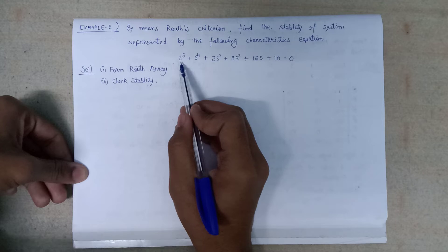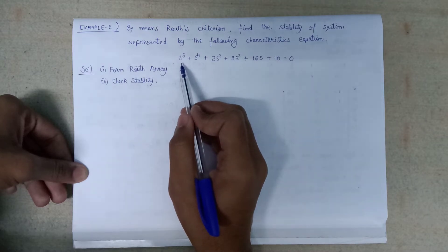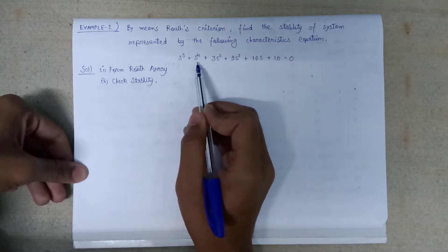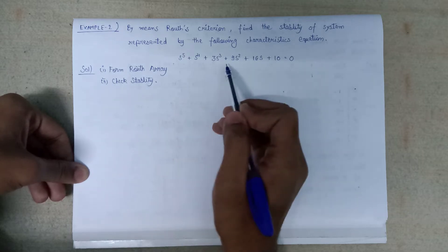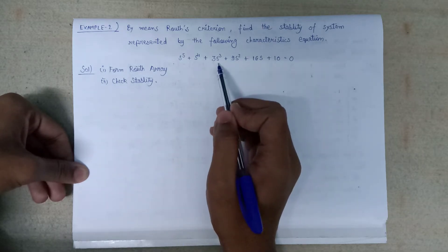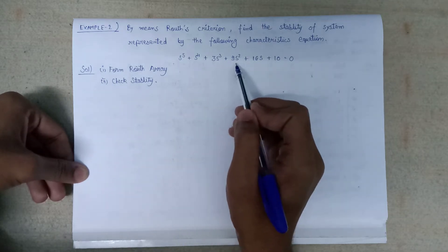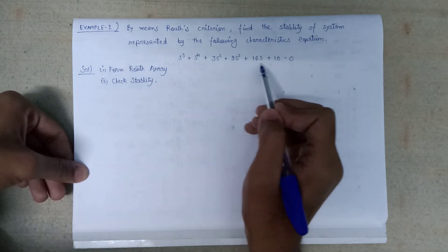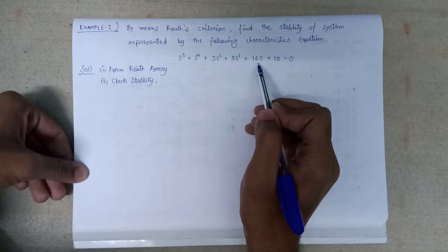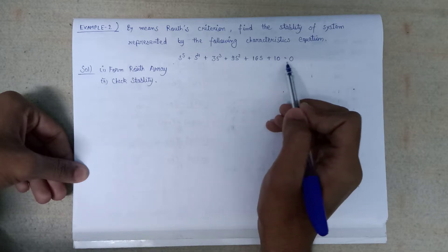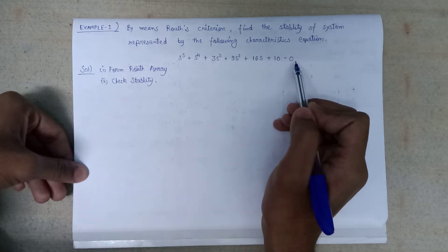The characteristic equation given in this question is: s to the power 5 plus s to the power 4 plus 3s cubed plus 9s squared plus 16s plus 10 equals zero.